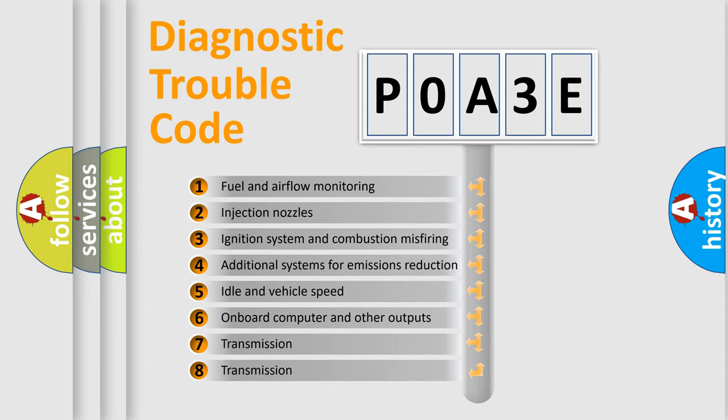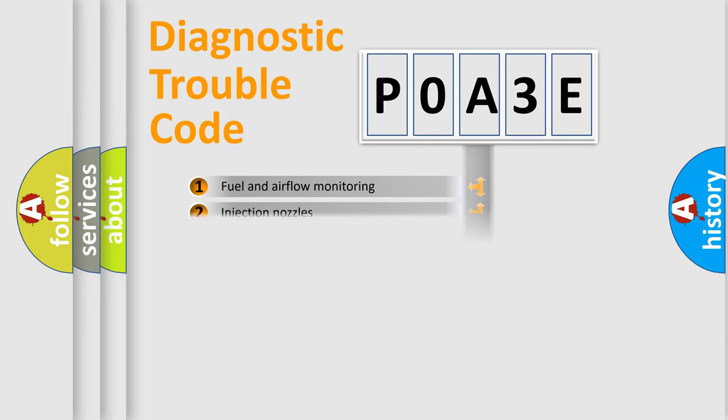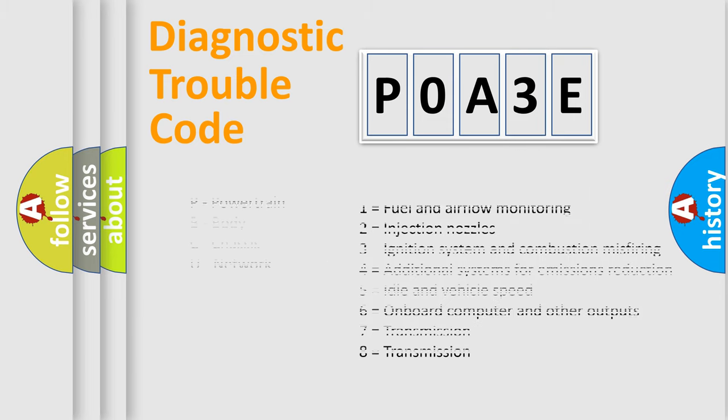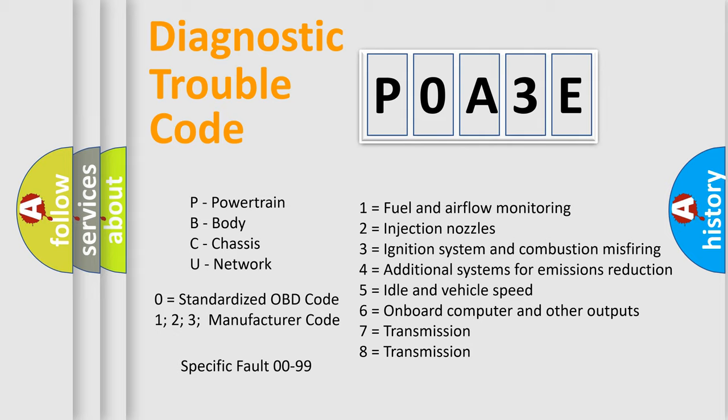The third character specifies a subset of errors. The distribution shown is valid only for the standardized DTC code. Only the last two characters define the specific fault of the group. Let's not forget that such a division is valid only if the second character code is expressed by the number zero.